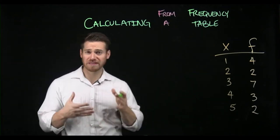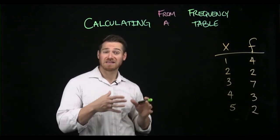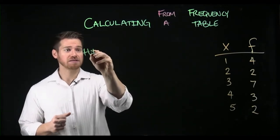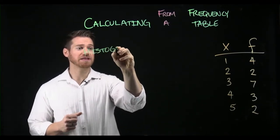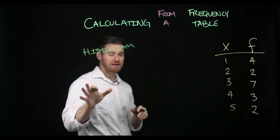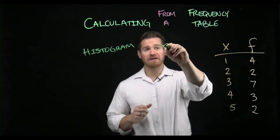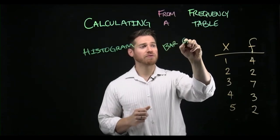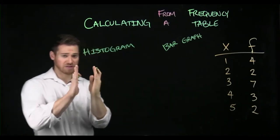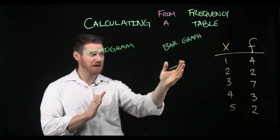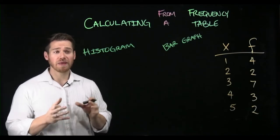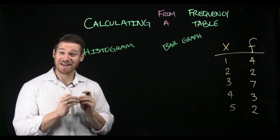From a frequency table, we might want to display data graphically. A histogram is a common way to do a graphic display, assuming the data are interval or ratio scale of measurement. A histogram is a little different than a bar graph in one important way: in histograms, all the bars touch. In a bar graph, the bars don't touch, and this matters because it resembles the nature of the data that underlies it.